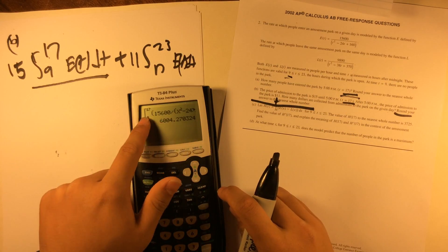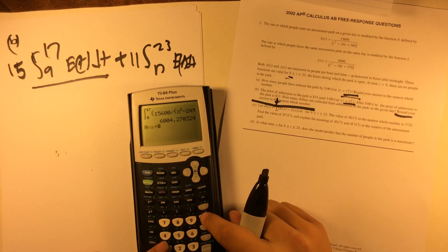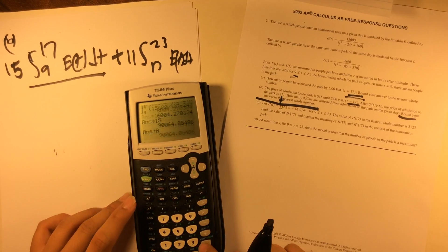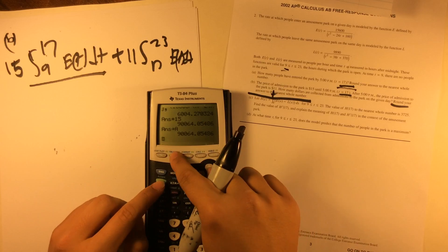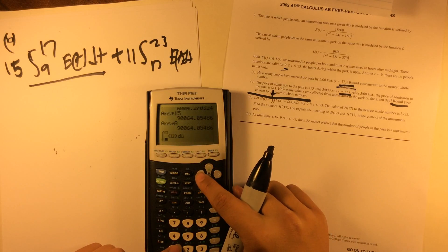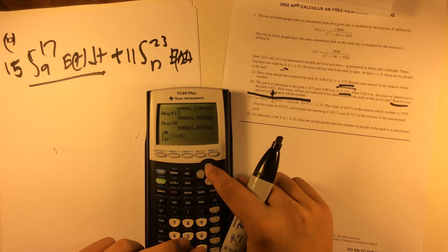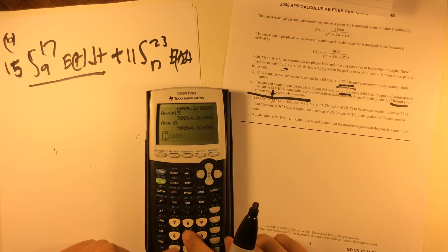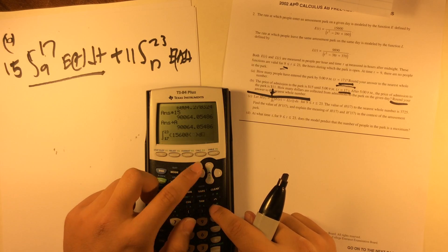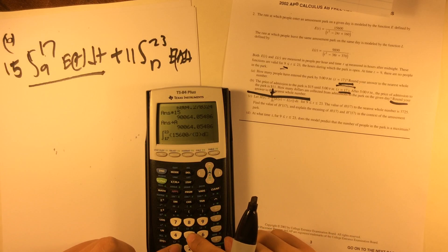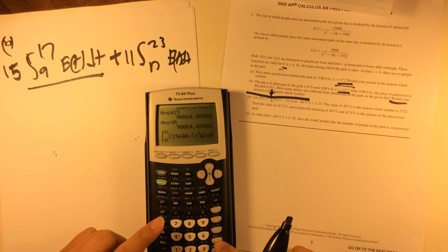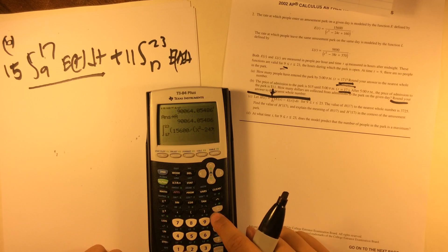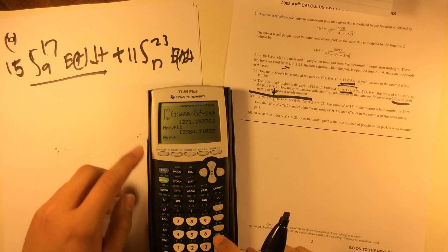You punch it into a graphing calculator. On my calculator, I already have this part, I multiply that by 15, I can store that as A. And all we have to do is integrate from 17 to 23 this part, which is 15600 divided by X squared minus 24X plus 160, in parentheses, dX, times 11.